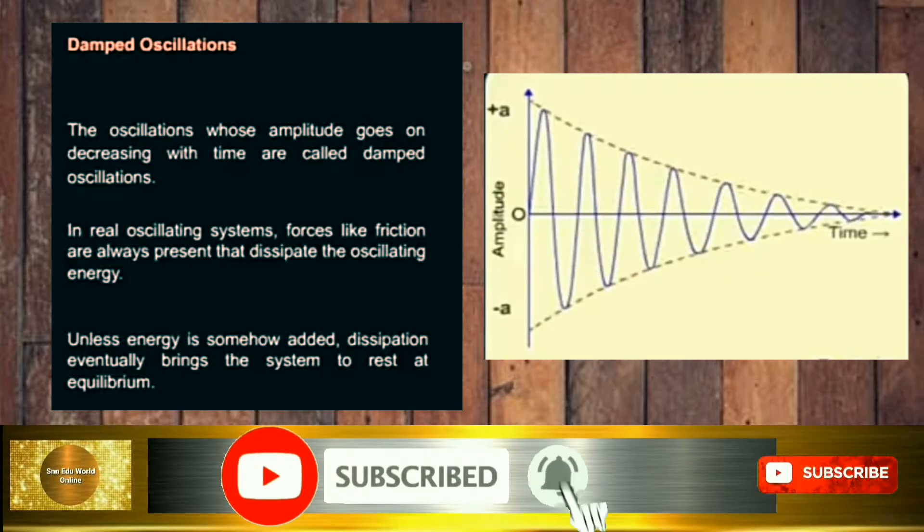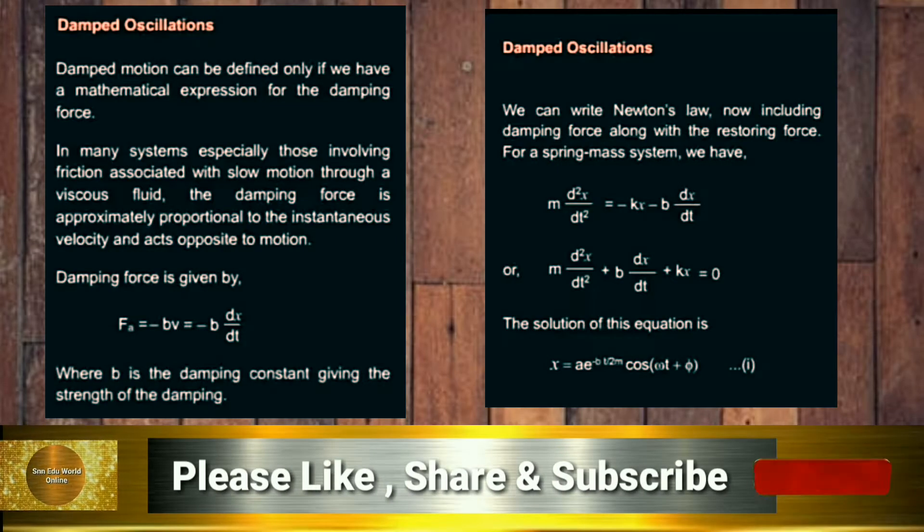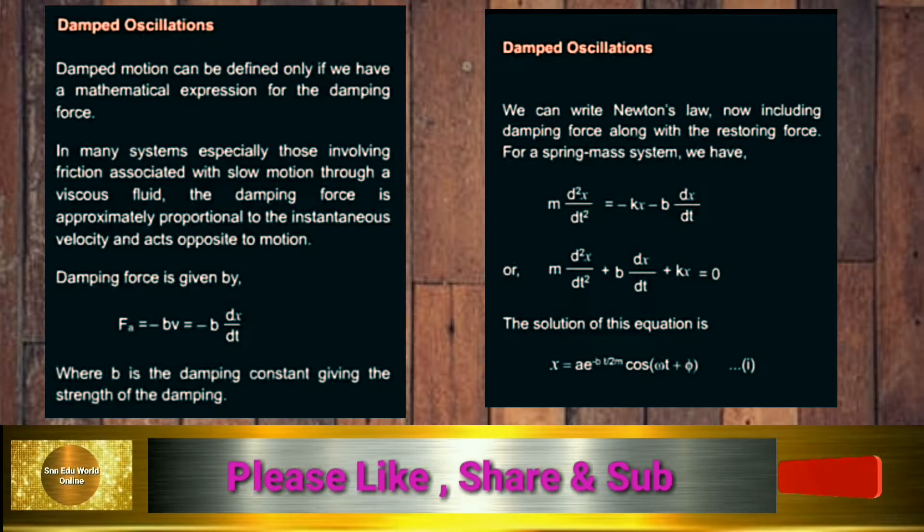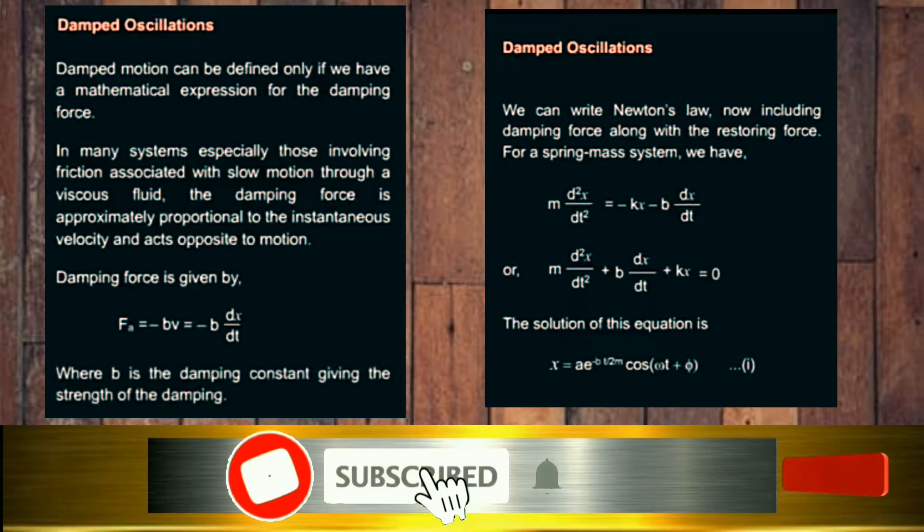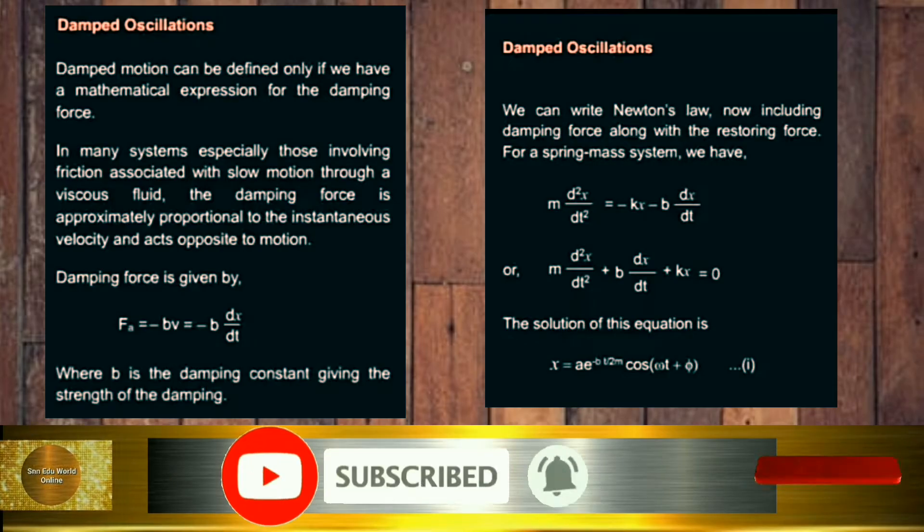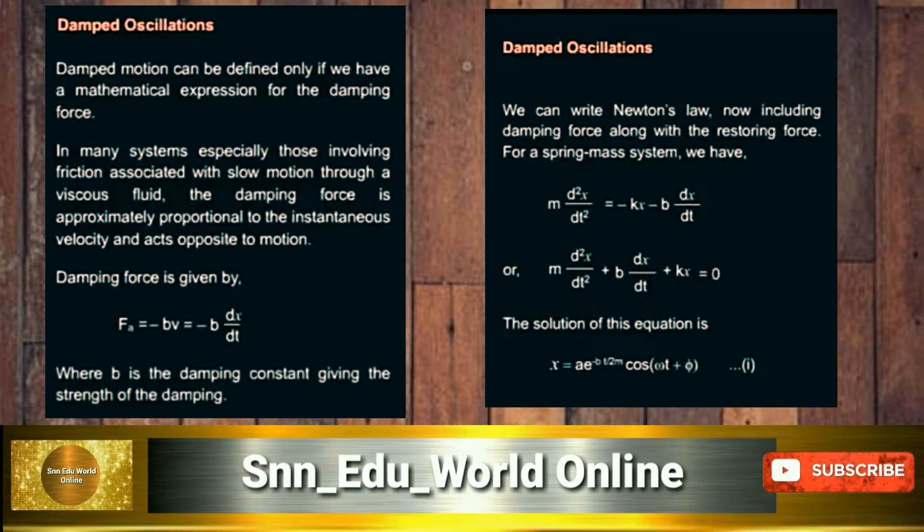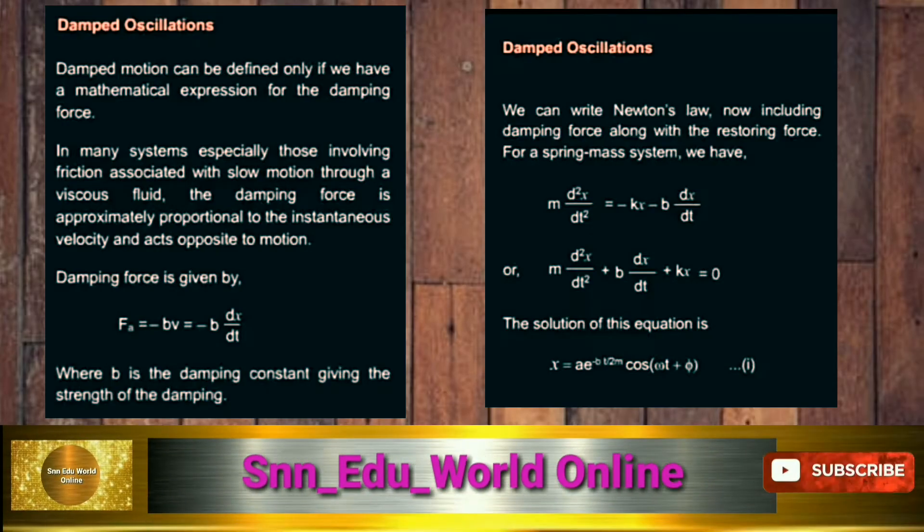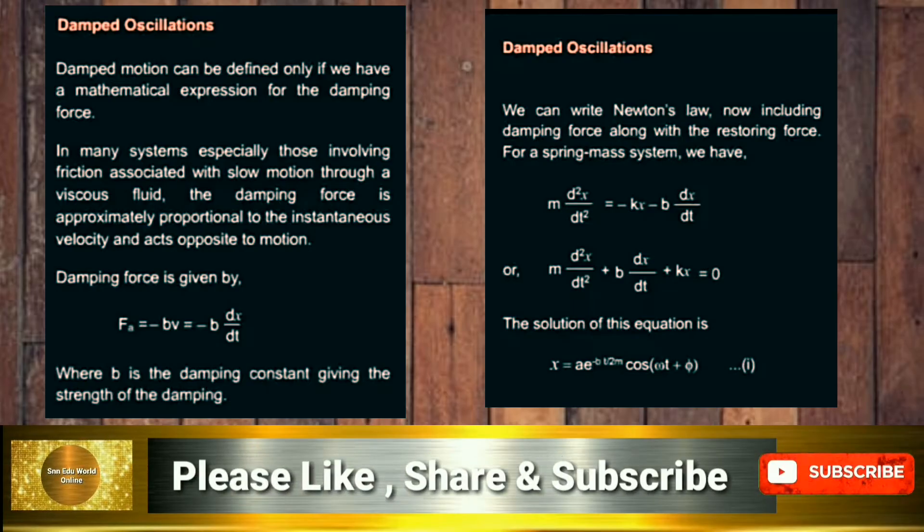Damped motion can be defined only if we have a mathematical expression for the damping force. In many systems, especially those involving friction associated with slow motion through a viscous fluid, the damping force is approximately proportional to the instantaneous velocity and acts opposite to motion.